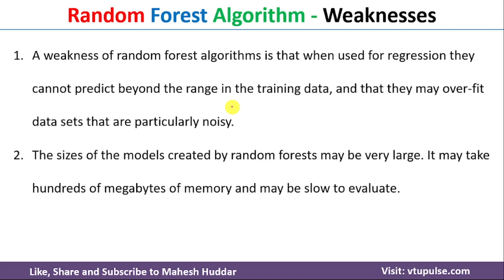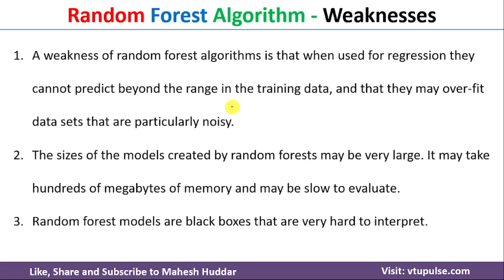Another weakness is that because we build multiple decision trees, the model requires a lot of memory — potentially hundreds of megabytes — compared to a single decision tree model. This can make the model slow at testing or deployment time. Finally, Random Forest is a black-box type of algorithm: what is happening internally is very difficult to analyze, and it is hard to determine which specific decision tree made which decision and whether it was correct or wrong.